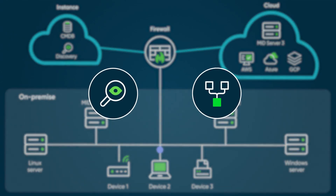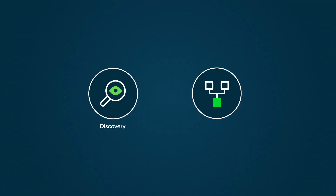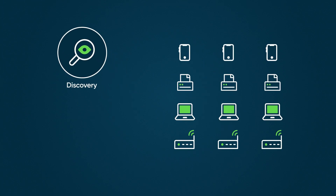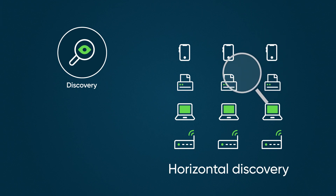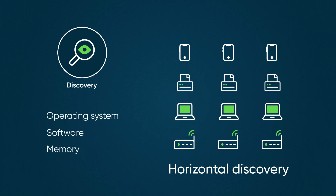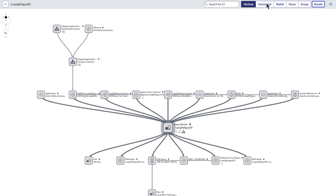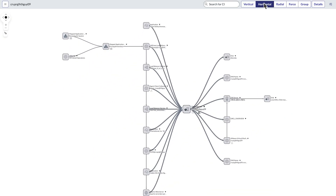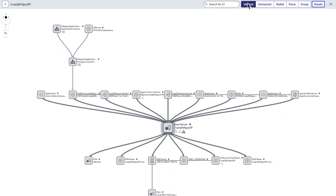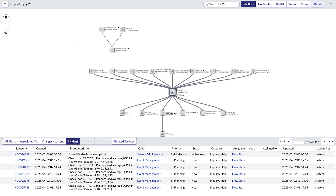ServiceNow offers two complementary capabilities: Discovery and Service Mapping. Discovery, sometimes referred to as horizontal discovery, finds devices on your network and the important attributes of those devices, such as the operating system, software, and memory. Discovery also establishes relationships between applications and devices, and between applications that communicate with each other.